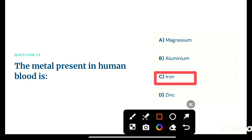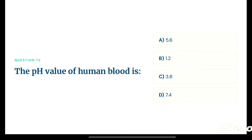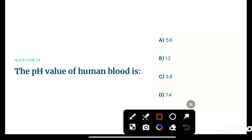Next question: the pH value of human blood is — option A: 5.6, option B: 1.2, option C: 3.8, option D: 7.4. The correct answer is option D, 7.4. Human blood is slightly alkaline, which is why its pH value is 7.4.